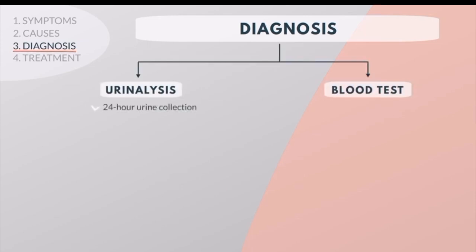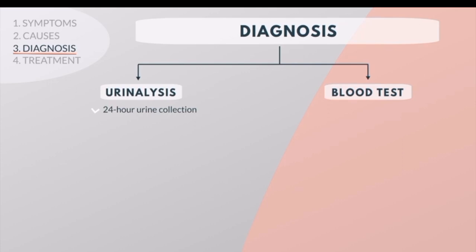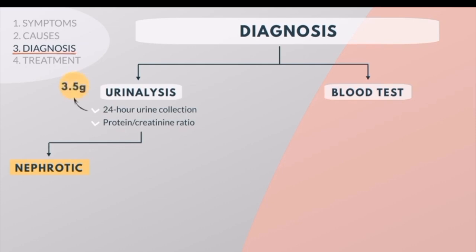The laboratory test of a 24-hour urine collection is useful for measuring the degree of protein loss, but collecting urine over a full 24-hour period is difficult for many people to accomplish. Alternatively, to assess protein loss, a single urine specimen can be tested to measure the ratio of protein to creatinine. Nephrotic range proteinuria in a 24-hour urine collection is more than 3.5 g of protein in the urine. A protein-to-creatinine ratio of 2 to 3 mg protein per mg creatinine also indicates nephrotic range proteinuria.